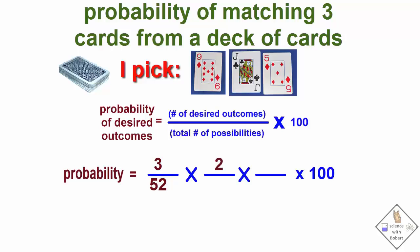The second choice, there are two desired outcomes with 51 cards left in the deck because one card has been removed.